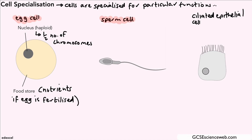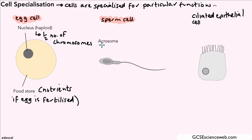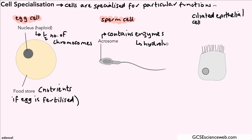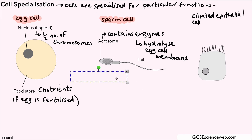The next cell we want to look at is the sperm cell and there are a few different parts we need to look at. The first one is called the acrosome, and the acrosome is a small part right at the tip of the sperm cell. It contains what we call enzymes, and these enzymes have a specific job — they are designed to hydrolyze, or in other words break down, the membrane of the egg cell. So as soon as the sperm cell reaches the egg cell, that enzyme can be released and the cell membrane of the egg cell is broken down.